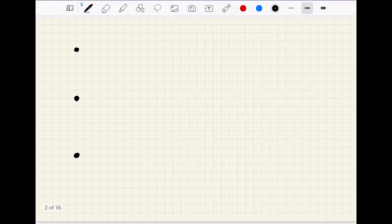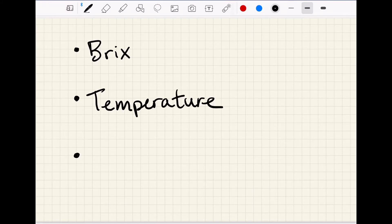Typically when we're talking about fermentation tracking, we're talking about measuring bricks and temperature on our fermentations and we're looking at how those values are changing over time. So those are our three pieces of information that we're working with: bricks, temperature, and time.